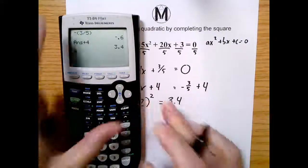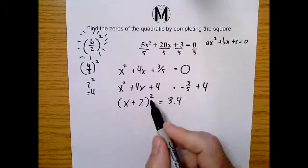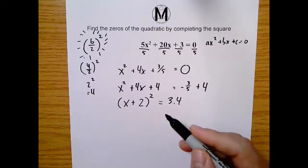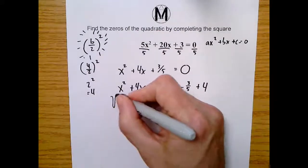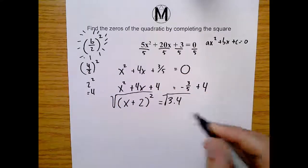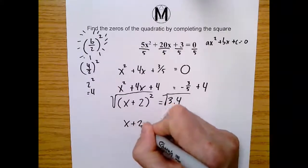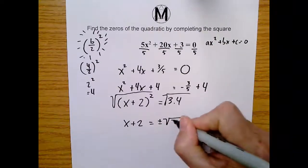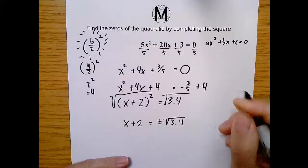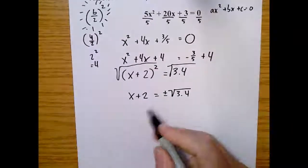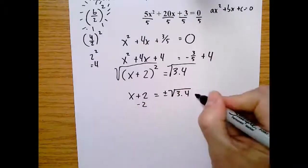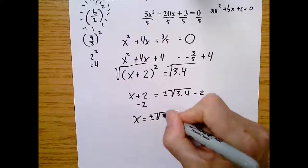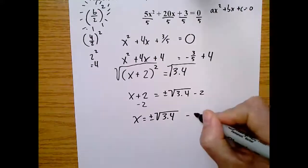Okay, so here we go. Now we want to get this square to go away, and we know the opposite of a square is taking a square root. So I'm going to take the square root of both sides, and I'm going to get x plus two is plus or minus the square root of 3.4. And we're almost done. The next step is I'm going to subtract two from both sides to get x all by itself. So you have x is plus or minus the square root of 3.4 minus two.